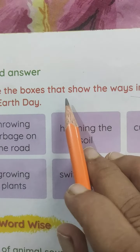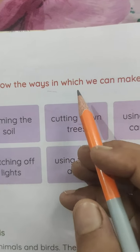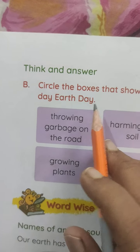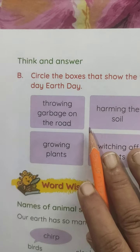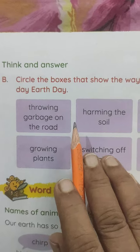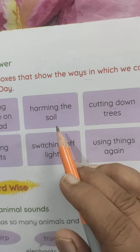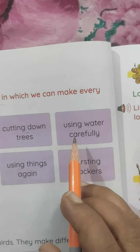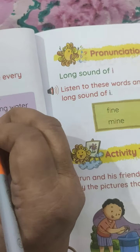Circle the box that shows the way in which we can make every day Earth Day. Throw garbage on the road? No. Harming the soil? No. Cutting down trees? No. Using water carefully? Yes.